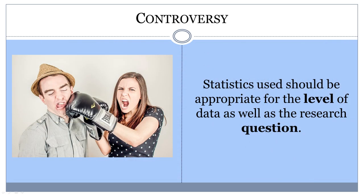Classifications of some forms of data are debated. For example, some researchers treat the measurement of intelligence as ordinal while others treat it as interval. Likewise, money in a bank account may be considered ratio since having a balance of zero means you don't have any money. However, others argue it is interval since it is possible to have a negative balance, which makes the zero point simply another point of measurement. So, what level do you think it is? Can you think of any other controversial examples?